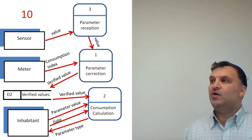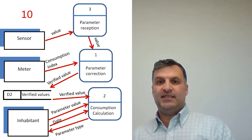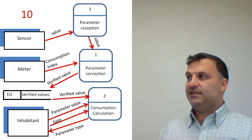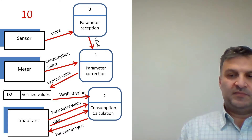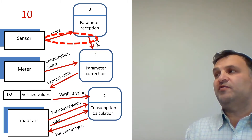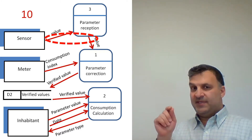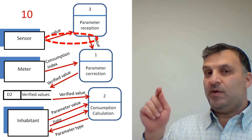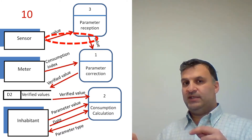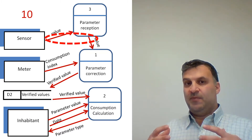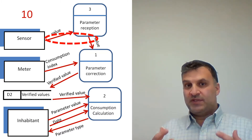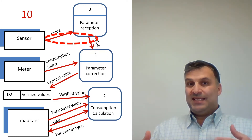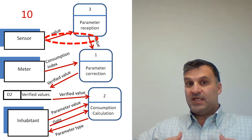We then replace the data store with a process. What is the mistake now? Most of the time, having one process with only one input and one output represents a mistake. We should pay attention to this because a process is supposed to produce something meaningful — usually it should combine many types of data in order to produce a new result.